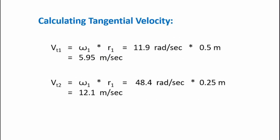Now I can calculate the tangential velocity for both of those. So vt1 comes out to be 5.95 meters per second. And v2 is 12.1 meters per second.